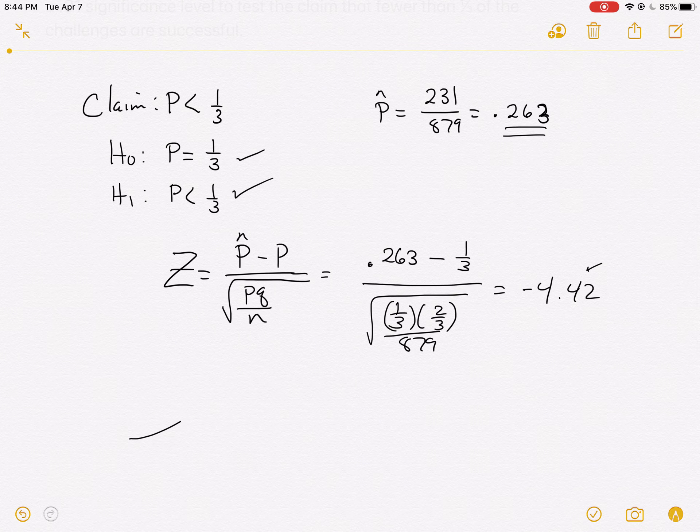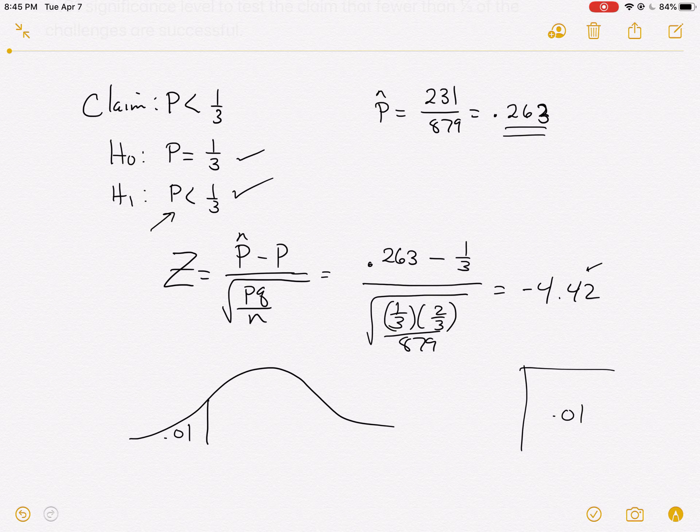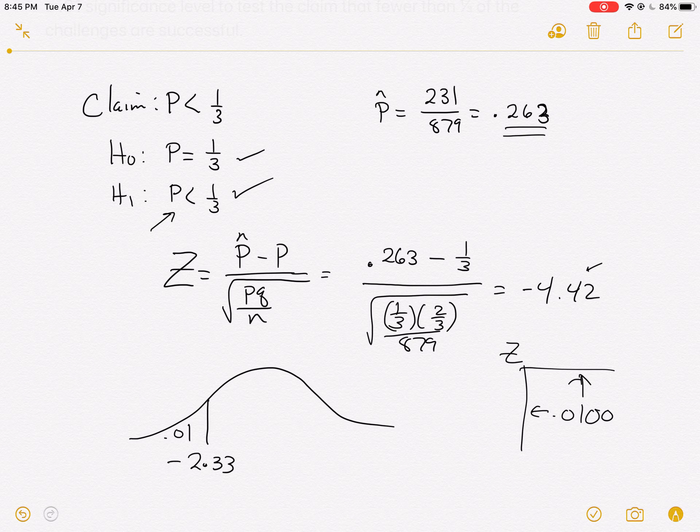Now what about the critical value? We know that it's going to be on the side where the alternative hypothesis is pointing, so it's going to be down here on the left-hand side. They wanted a 0.01 level of significance, so I'm going to go into the chart and look up 0.01 in the middle of the chart, trying to get the closest we can and extrapolate out to the z. As we do so, we're going to come up with negative 2.33 from our chart. We're going to reject if we're more than 2.33 standard deviations to the left.